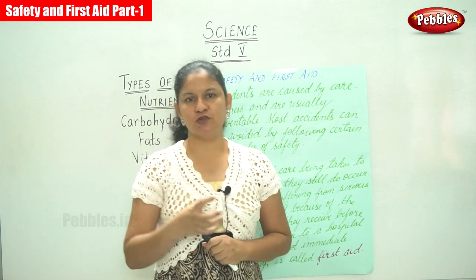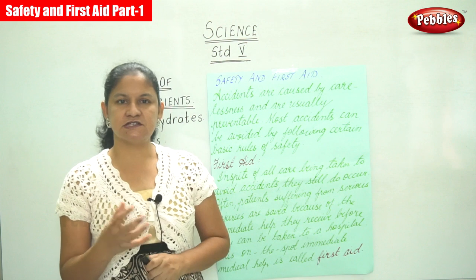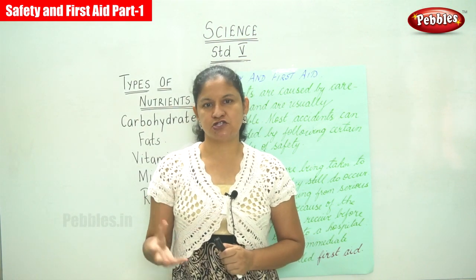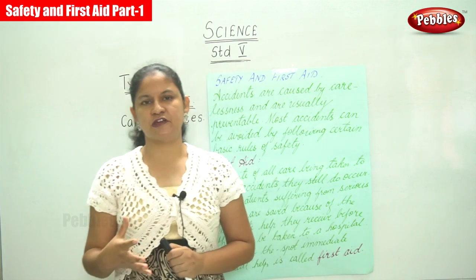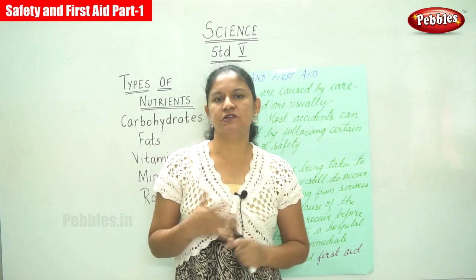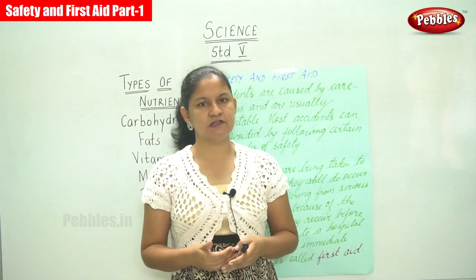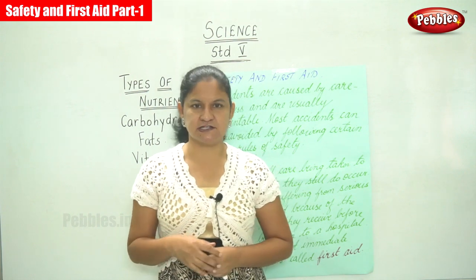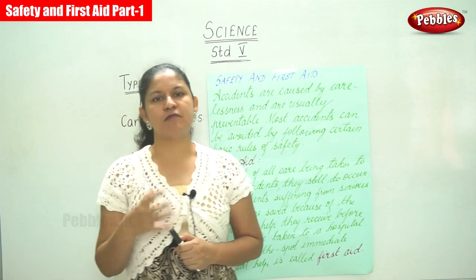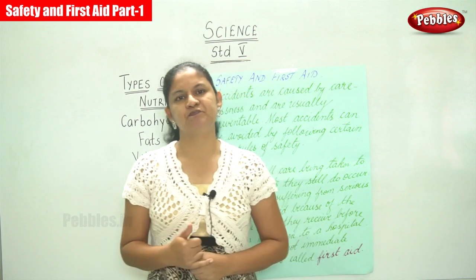Moving on to diseases, which are of two types: communicable diseases and non-communicable diseases. Communicable diseases are diseases that spread through germs from one infected person to a healthy person, and they spread through air, direct contact, animals, equipment, etc. We can prevent communicable diseases by maintaining personal and community hygiene.